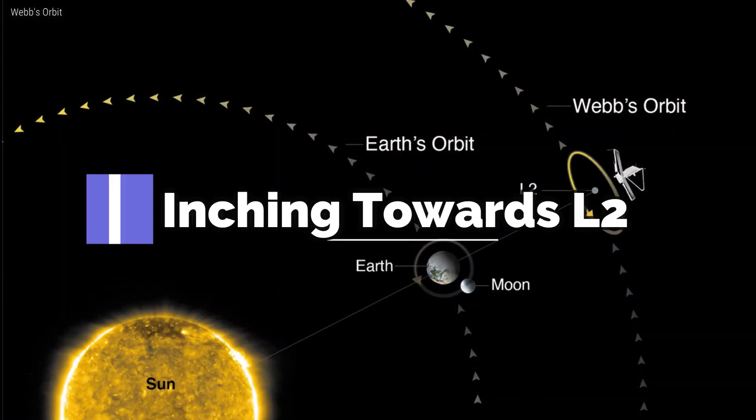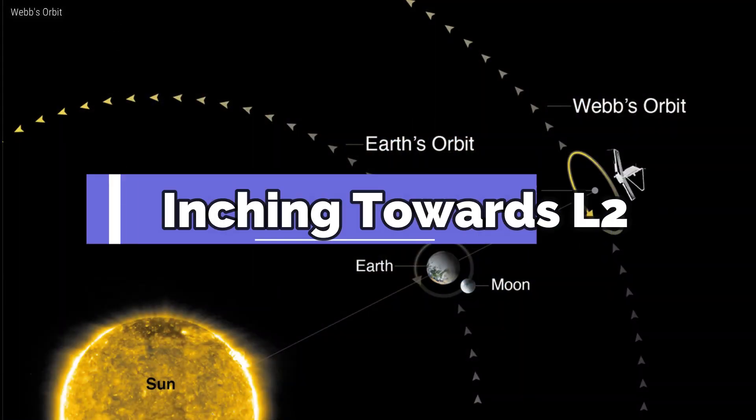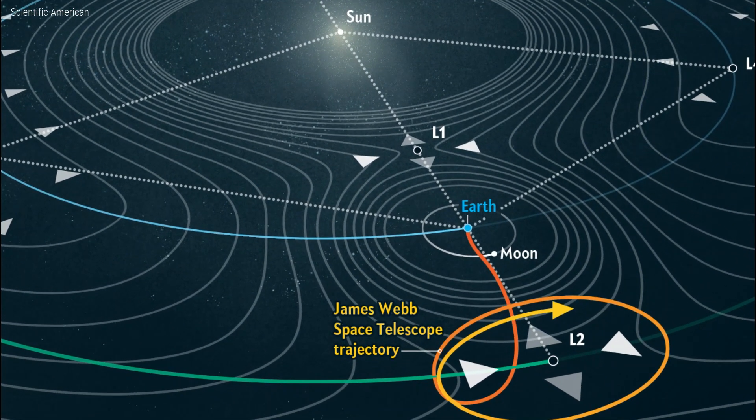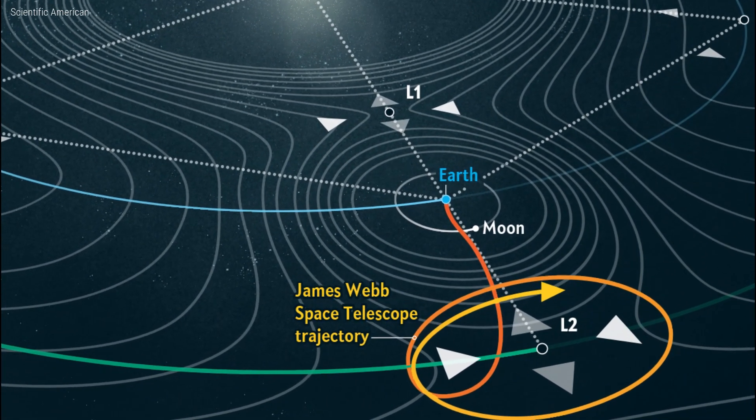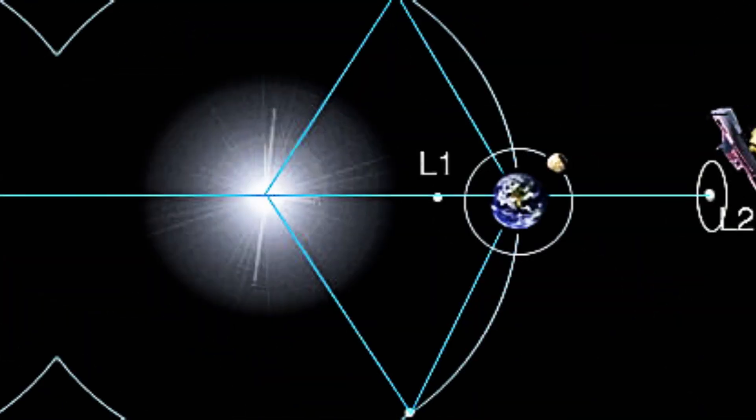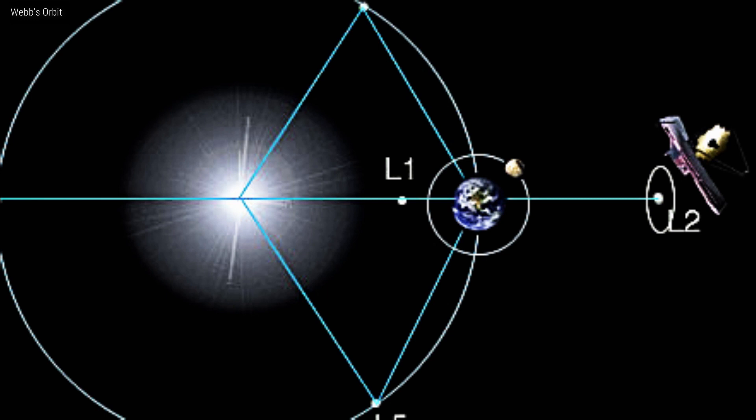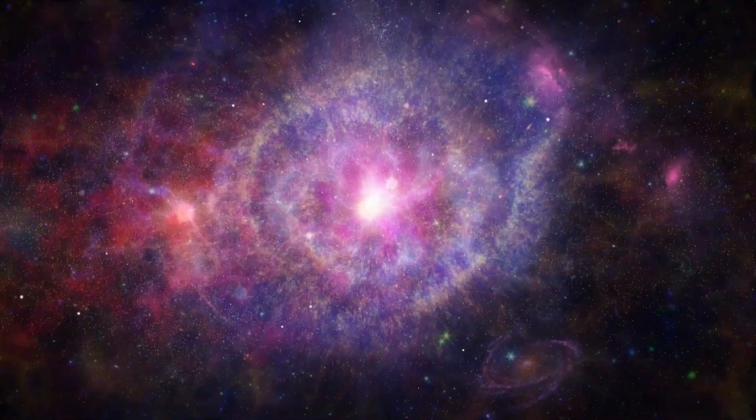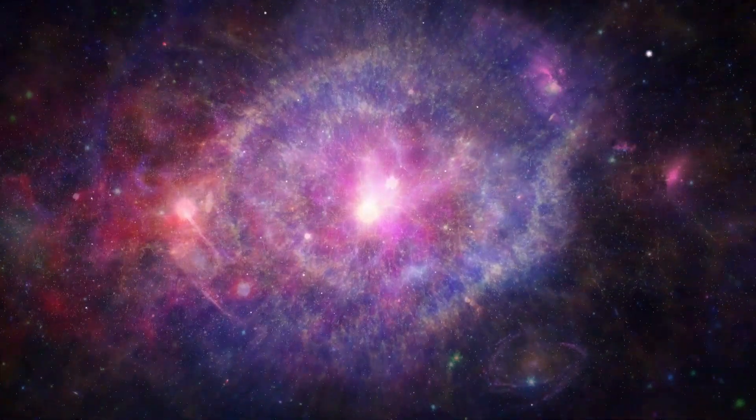Inching towards L2. Webb's journey to its observation point at the second Lagrange point, L2, was a remarkable feat of precision maneuvering. This point is located about 1.5 million kilometers from Earth, providing an ideal vantage point for unobstructed observations.